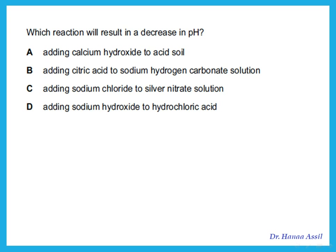Which reaction results in a decrease in pH? To decrease the pH of a solution, you should add acid. So the option that involves adding acid is the one that decreases pH — that is option B.